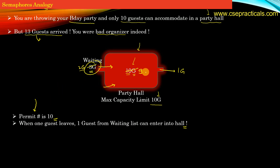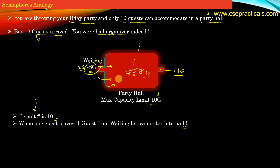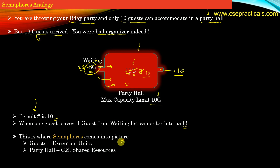The total number of guests in the party hall becomes 10 again. As soon as a guest leaves, a guest from the waiting list can enter into the party hall. If there is capacity available, a guest from the waiting list is allowed to enter so that the party hall is full to its capacity. This is where semaphores come into the picture.